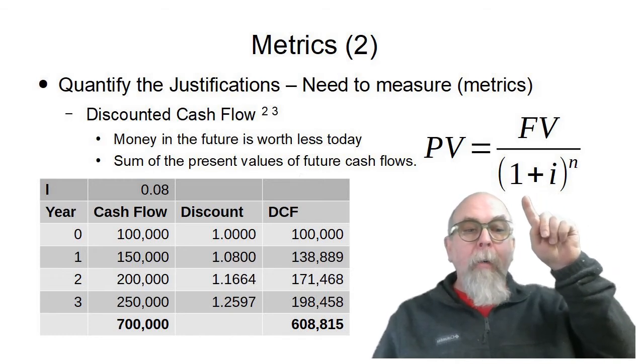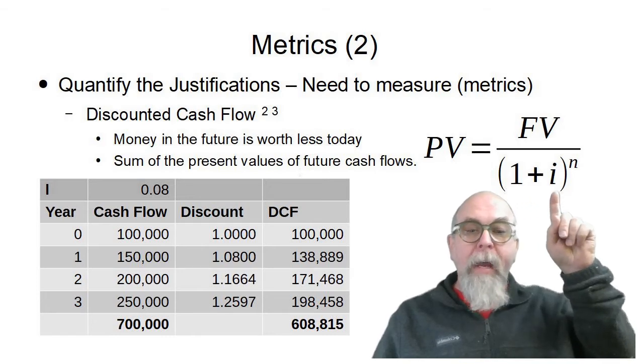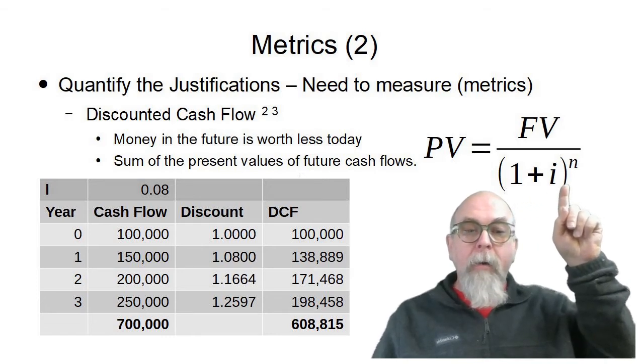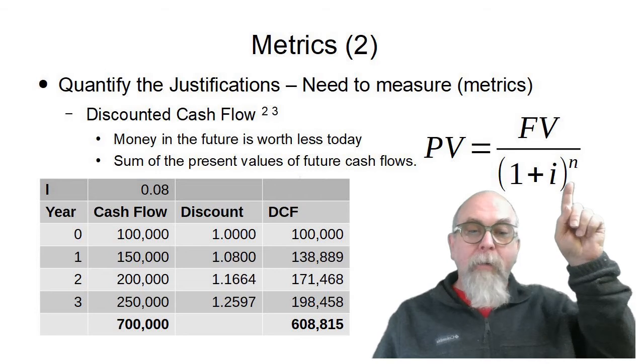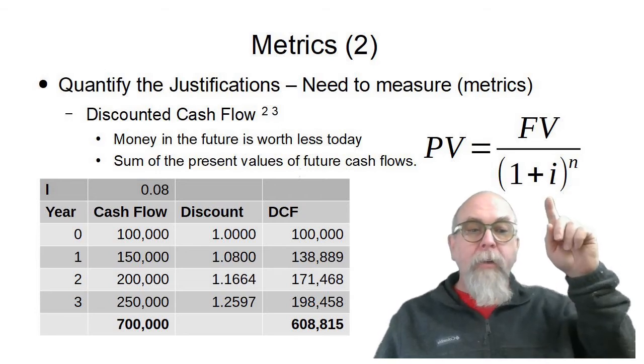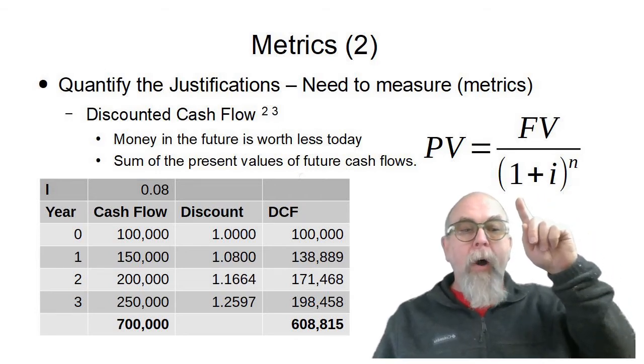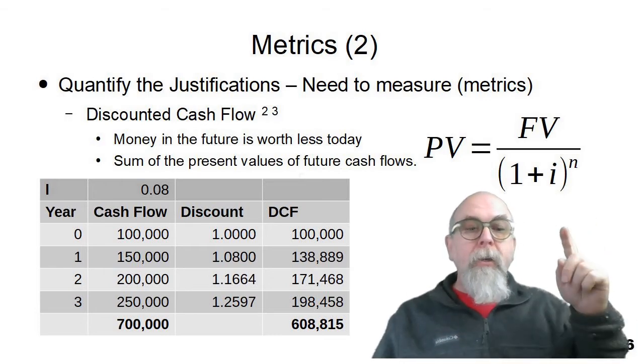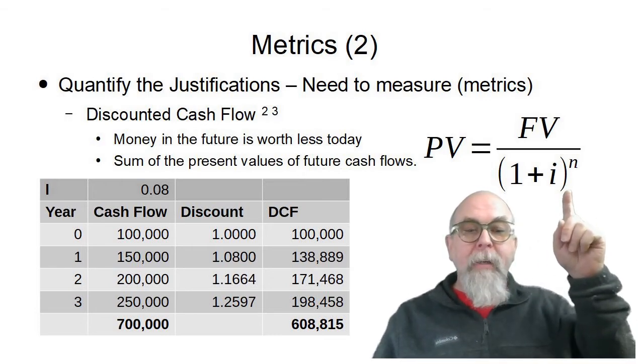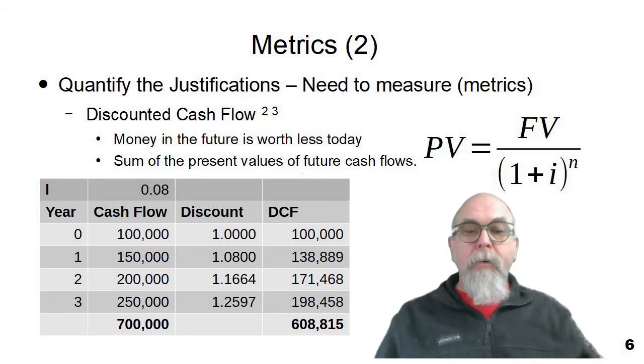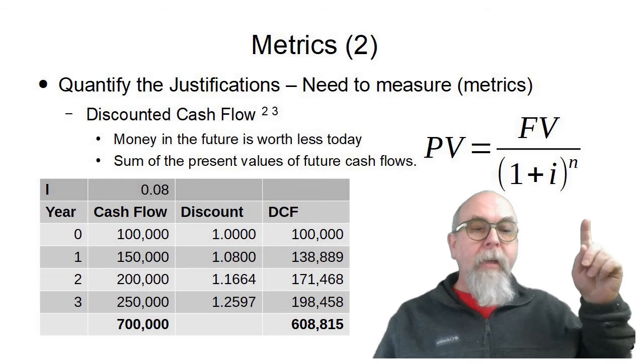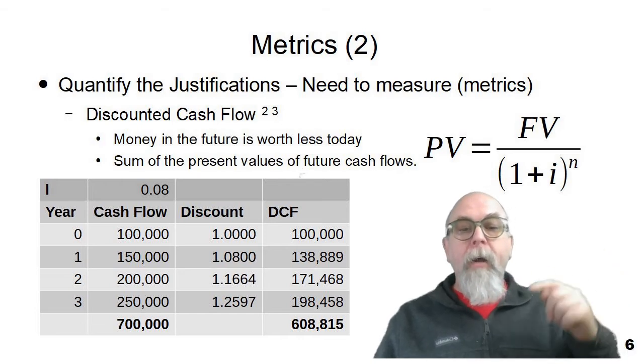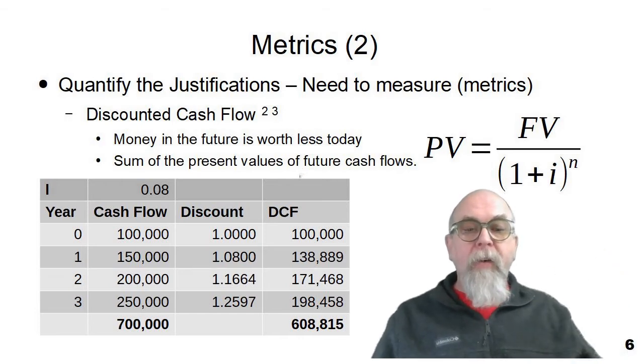And the discount is this bottom here of the fraction, 1 plus i to the nth. So, 1 plus 0.08 to the nth power. Well, anything to the zeroth power is 1, so the discount is 1. At the end of year 1, 1.08 to the first power is 1.08. You can see that 1.08 then to the second power at the end of year 2 is 1.16. And 1.08 to the third power is 1.2597.